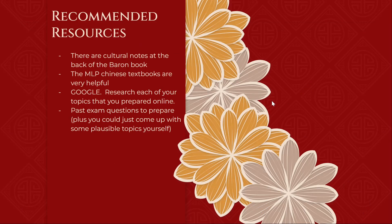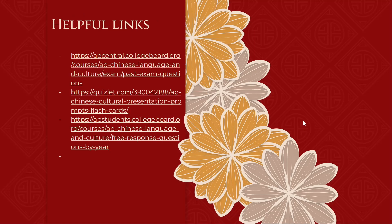Some recommended resources: there are cultural notes at the back of the Barron's book, though they're quite brief. The Malin Ping Chinese books are very helpful, but they may only be accessible in the Bay Area. Google is your best friend — research each topic in depth online. You can go through past exam questions or come up with plausible ones yourself, using the general topic list as a starting point. Helpful links for previous exam problems, grading rubrics on the official College Board website, and Quizlet are also available.